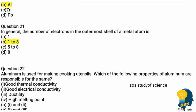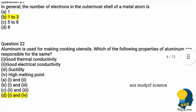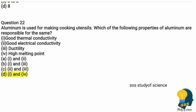Question twenty-one: in general, the number of electrons in the outermost shell of a metal atom is — metals start from atomic number three (lithium). Lithium has a minimum of three electrons. Option B is the correct answer: one, two, or three electrons in the outermost shell.